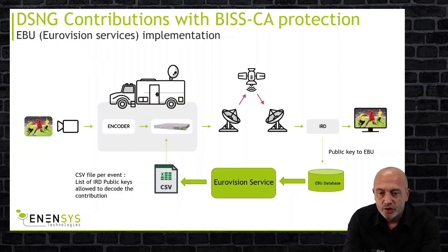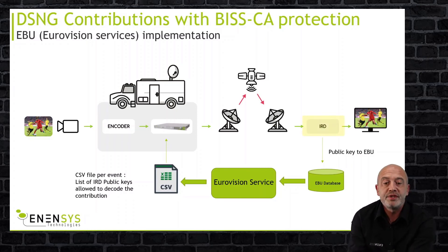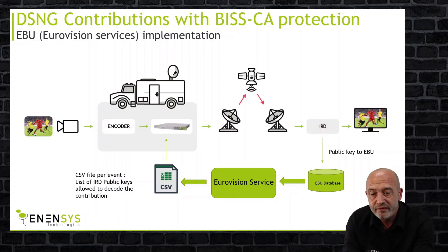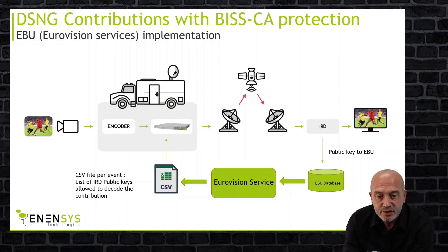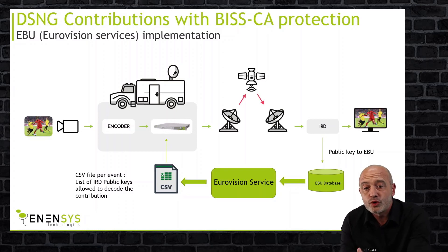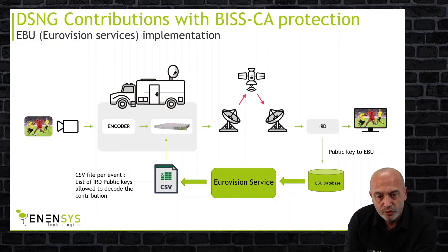To finish this presentation, here is an example of BIS-CA used in a contribution network from EBU. Every IRD of the member organizations has been updated with BIS-CA, so each receiver now has a private key and a public key for the BIS-CA process. Everybody has provided the public key of their receiver to the organization, which now has a database of public keys. For each event, they provide to the uplinker and transmitter the list of public keys allowed to receive the content. This list of public keys is loaded into the BIS-CA block, which generates the EMM table and ECM table for the receivers.